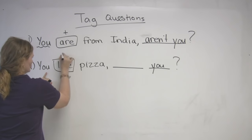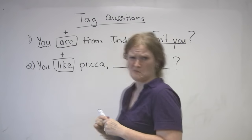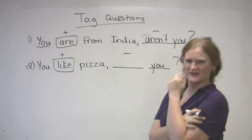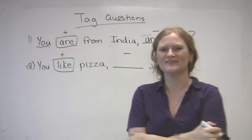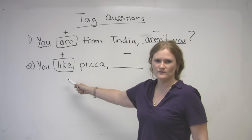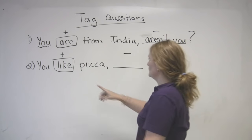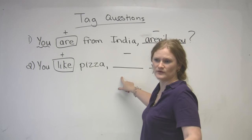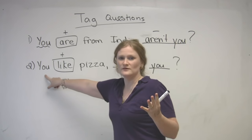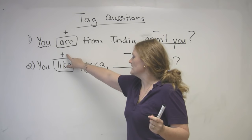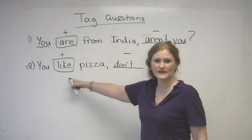This is positive, so we must use the negative here. What's the negative of 'like'? If we were living in the time of Shakespeare, that would be awesome — but we're not. So does anyone know what we have to use instead of 'like'? We have to use the lovely auxiliary verb 'do'. You like pizza — so we can either use do, does, doesn't, or don't. What do you use with 'you'? We use 'do'. The negative is 'don't'. So you're going to say: 'You like pizza, don't you?'